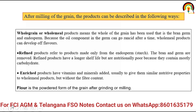Because the oil component in the germ can go rancid over time, whole meal products can develop off-flavors. Refined products refer to products made only from the endosperm — the starch — where the bran and germ are removed. Refined products have a long shelf life but are nutritionally poor because they contain mostly carbohydrate. Enriched products have vitamins and minerals added, usually to give them similar nutritive properties to whole meal products but without the fiber content. Flour is the powdered form of the grain after grinding or milling.